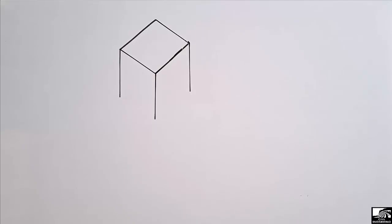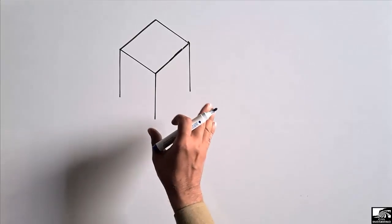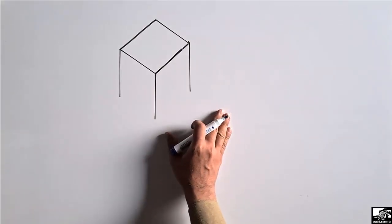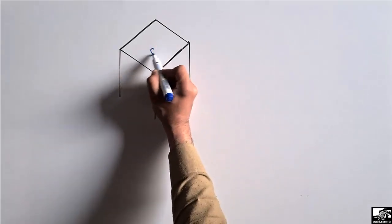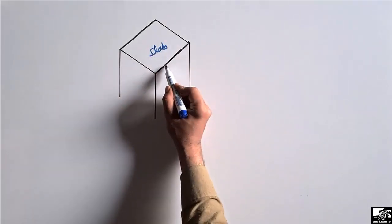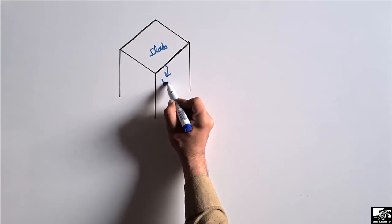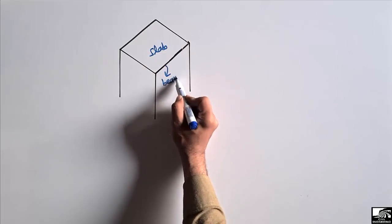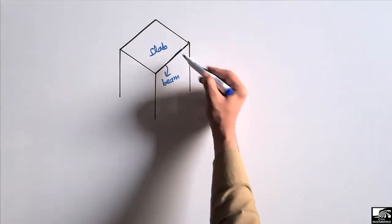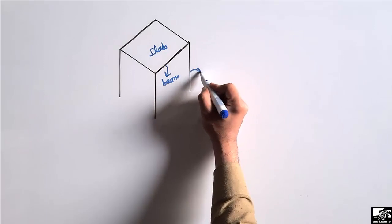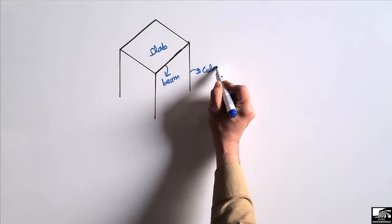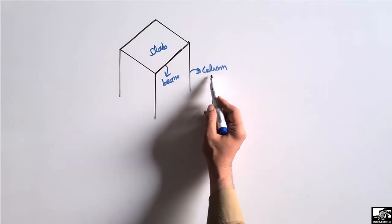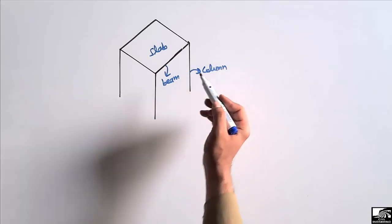Hello guys, welcome back to the civil engineering YouTube channel. Please subscribe to our channel for daily civil engineering videos. Today's lecture we are going to find out the self weight of structure members. These structure members are the slab, the beam — the horizontal member placed monolithically with the slab — and the column, the vertical member which takes the load of the beam and slab.